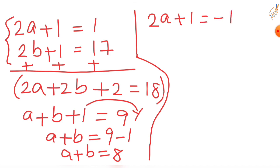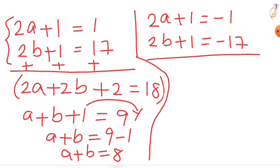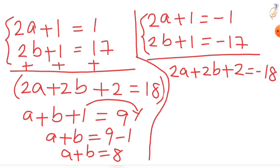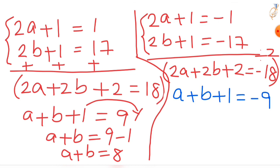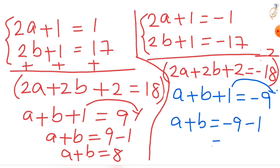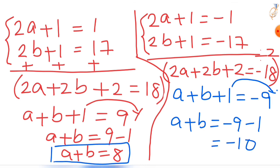Now taking the negative values: (2a + 1) = −1 and (2b + 1) = −17. Adding these gives 2a + 2b + 2 = −18. Dividing by 2: a + b + 1 = −9, so a + b = −10.